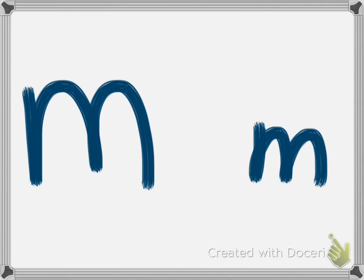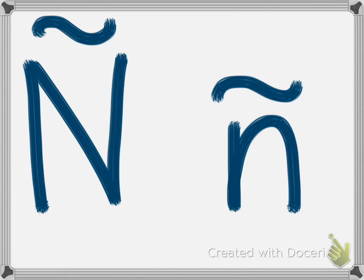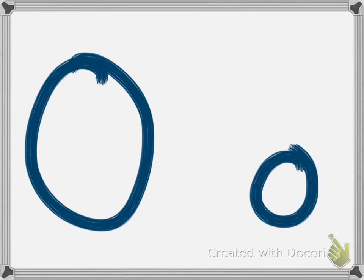M — 'eme,' eme. N — 'ene,' ene. And very particular to Spanish: 'eñe,' eñe. O, O.